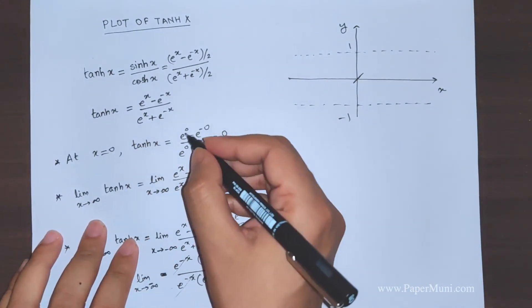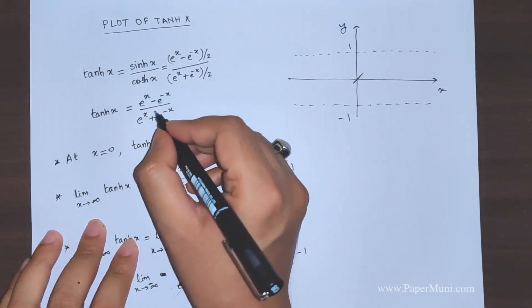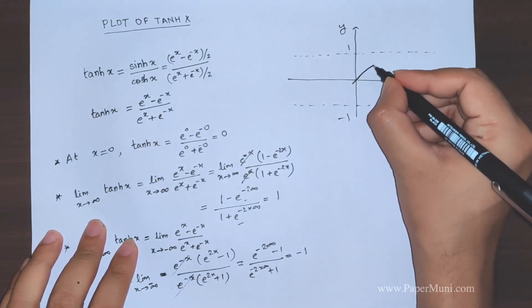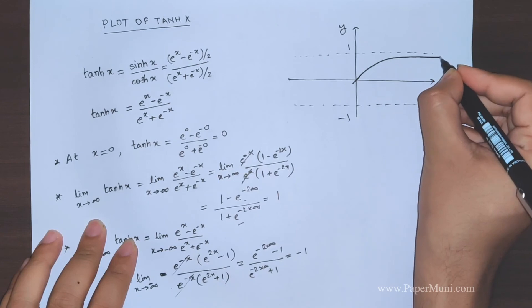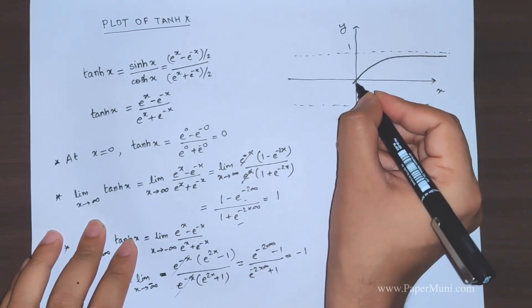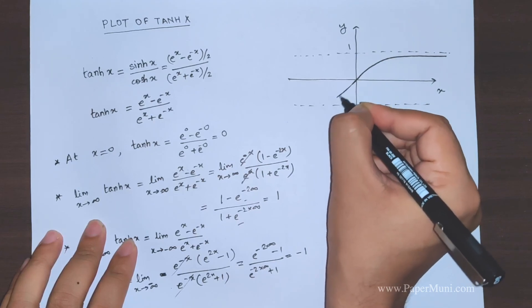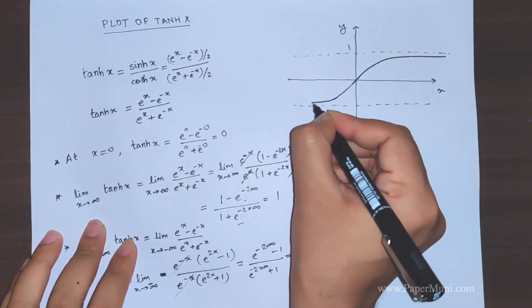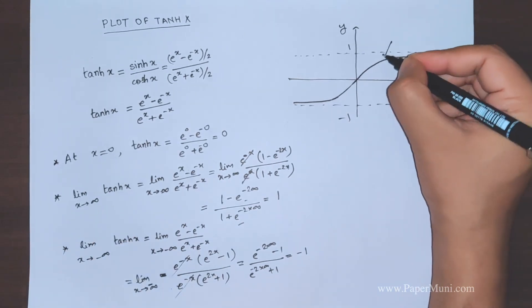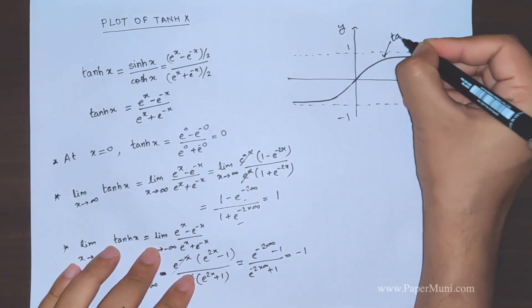One can see by differentiating that the derivative is continuous everywhere, so we'll have a smooth curve. It tends to 1 at plus infinity and tends to -1 at minus infinity. This is the graph for tan hyperbolic x.